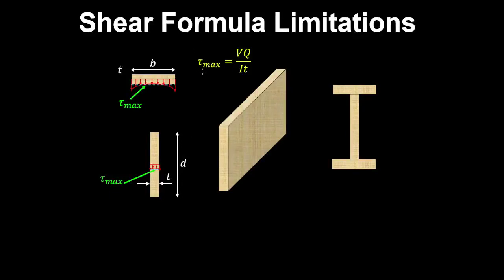There are several limitations for the shear formula that we need to consider, and one of those is where we have wide sections. For example, if the width to thickness ratio of the section is equal to 2, you get a 40% error in the prediction of the maximum shear stress and the actual maximum shear stress.